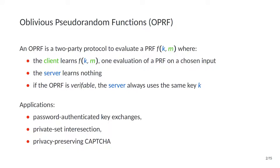On top of that, we want the server to not learn even the hash of the message, because that would allow the server to distinguish when the same input is reused twice. Moreover, some OPRF protocols have an additional property called verifiability. When an OPRF is verifiable, the server also provides a zero-knowledge proof that the same key K is reused across all iterations. OPRFs are an important primitive with several applications, including password authenticated key exchanges — notably OPAQUE — as well as private set intersection, privacy-preserving CAPTCHAs, and many other real-world applications deployed every day.